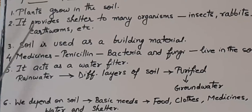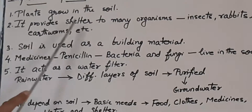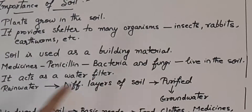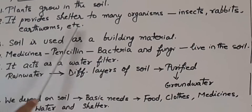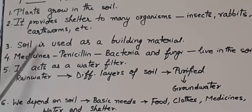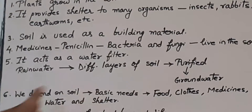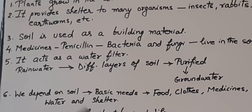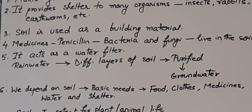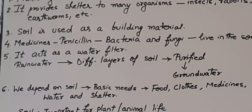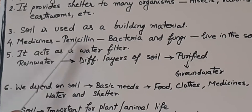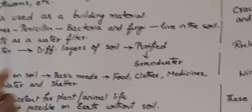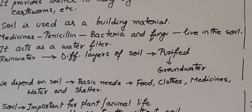Secondly, soil provides shelter to many organisms like insects, rabbits, earthworms, etc. Soil is also used as a building material. We can make many useful items like bricks, tiles, and pots from soil. Medicines like penicillin are prepared from bacteria and fungi which live in the soil.